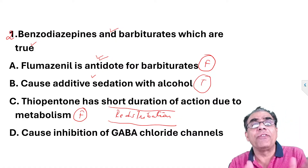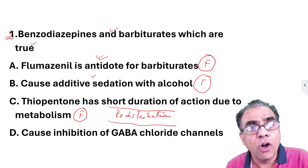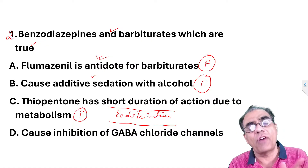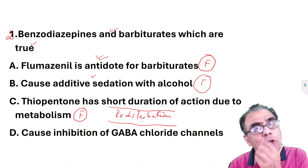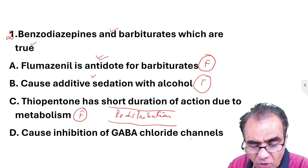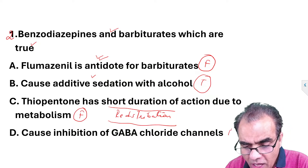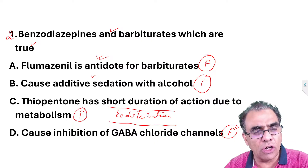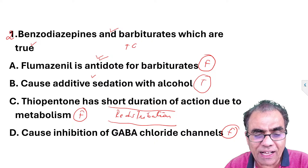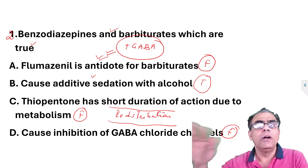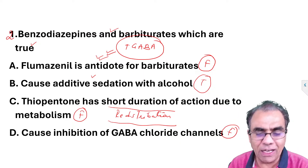However, the elimination half-life of thiopentone is 10 hours, so thiopentone is still present in the body in muscle or fat, but the patient becomes conscious because the drug leaves the brain by redistribution. Fourth statement: barbiturates cause inhibition of GABA-chloride channels — this is also false. Thiopentone, barbiturates, and benzodiazepines all facilitate GABA. Since GABA is an inhibitory neurotransmitter, they potentiate its effect to produce sedative or anesthetic action, not inhibit it.